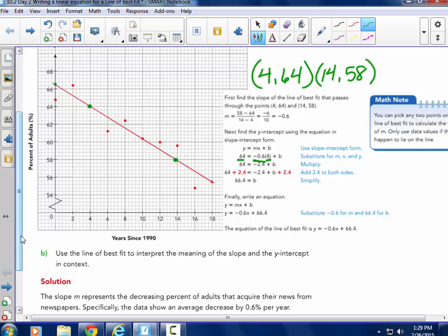So write the equation, y equals negative, yes, this is a negatively sloping line, 0.6x plus 66.4. So that is the equation of the line of best fit.